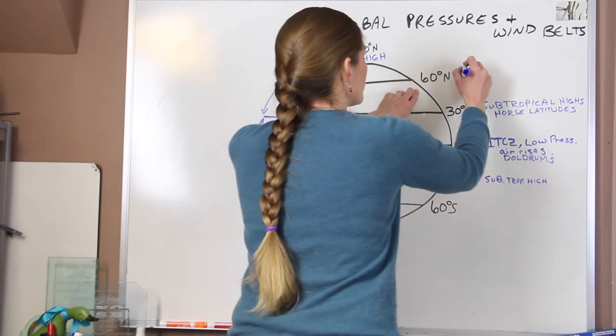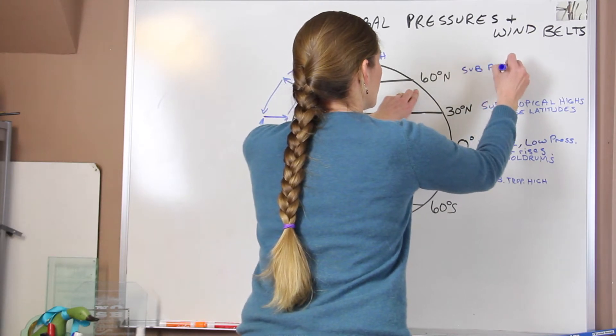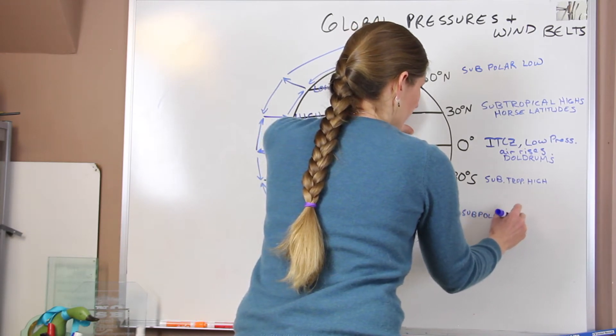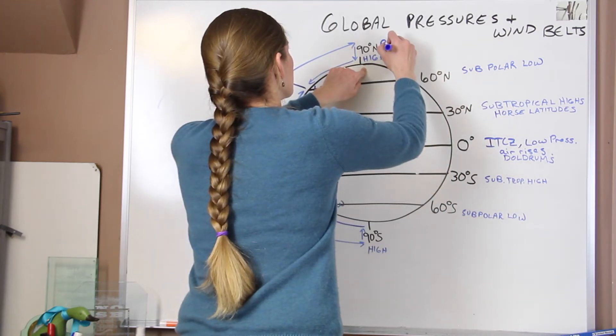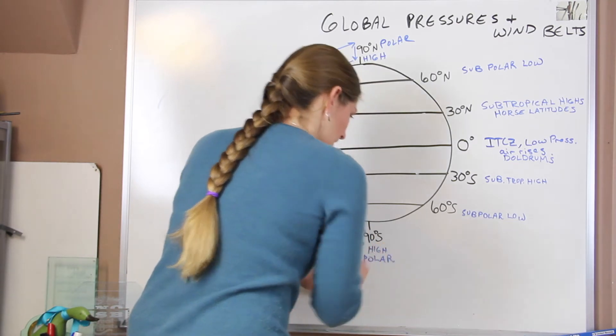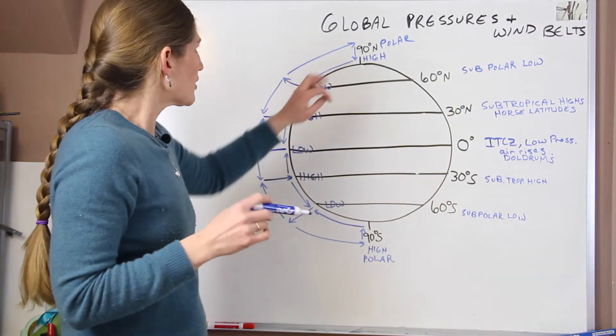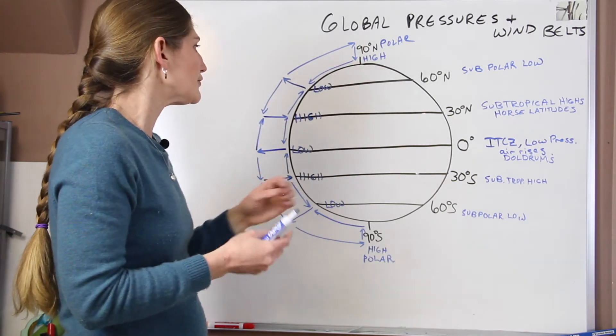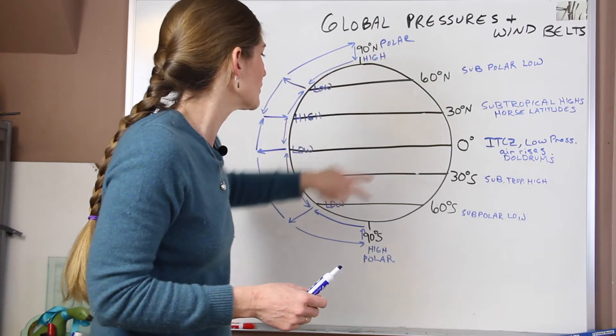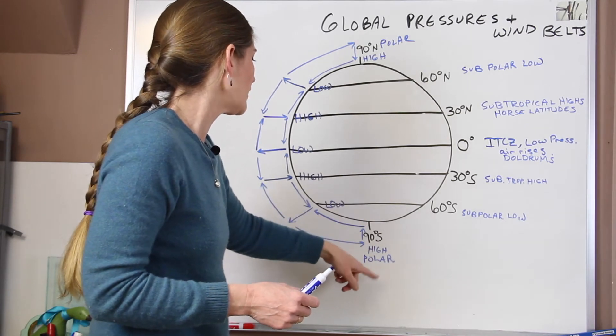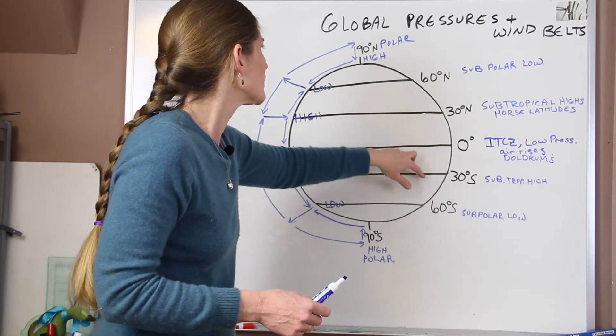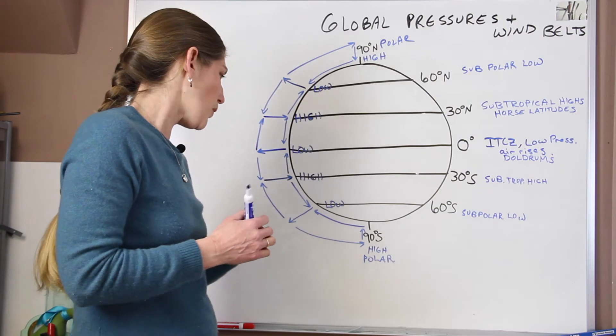At 60 degrees north and south, these are our subpolar lows. And then we have our polar highs at the top to keep it all kind of together. So at each one of these places, we'd see different things. We see rainfall kind of associated with our lows. So at the equator, and at 60 degrees north and south latitude, and we see very dry air at the highs. So at 90 degrees, and also at 30 degrees north and south, and also at the north pole.